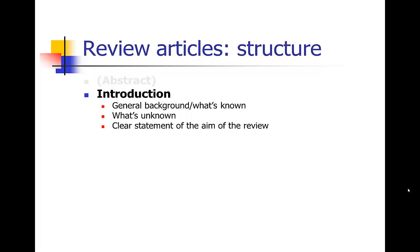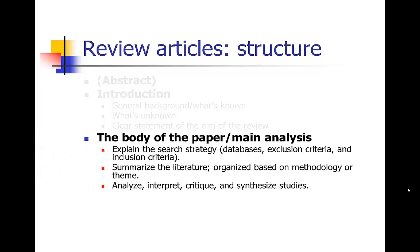Then you'll have the body of the paper — the main analysis, which will be the bulk of the paper. You're going to explain your search strategy, what databases you searched, and your exclusion and inclusion criteria. Then you'll summarize the literature you found and included in your review, organized in a way that makes sense — by methodology (randomized trials versus observational studies), by theme, or by experimental technique. You're analyzing, interpreting, critiquing, and evaluating those studies, and trying to synthesize what the body of research tells us. What are the take-away messages? What recommendations would you give? Or what are the questions that haven't been answered — the gaps in the literature that remain?